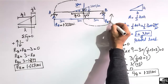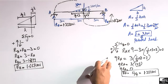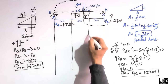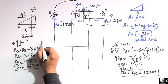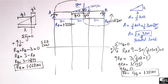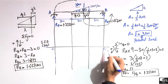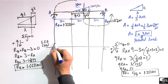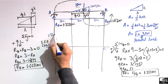This is the support reaction at B, which is 1.667 kilonewtons. Now, to draw the shear force diagram, we will draw the reference line. This is the reference line for the shear force diagram in the unit of kilonewtons, because shear force is a force. Ra is acting upward at 1.33 kilonewtons, so we start from here and move upward by 1.33.